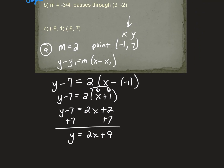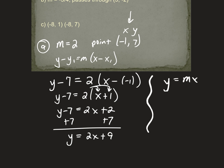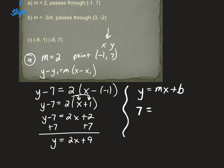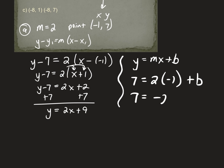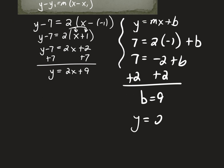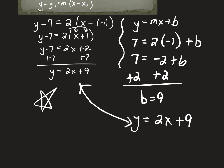Some of you would say, couldn't we just use y = mx + b directly? If you wanted to: plug in y = 7, m = 2, x = -1. So 7 = 2(-1) + b, giving 7 = -2 + b, so b = 9. Then write y = 2x + 9 — the same answer. That method is easier with whole numbers, but when you have fractions, point-slope is much easier. You can do either way.